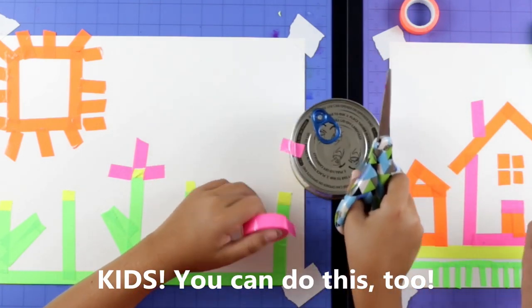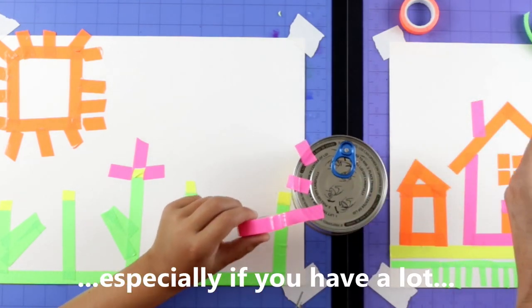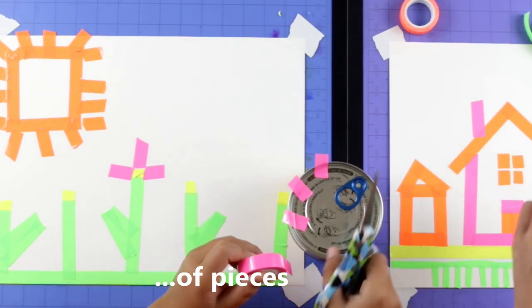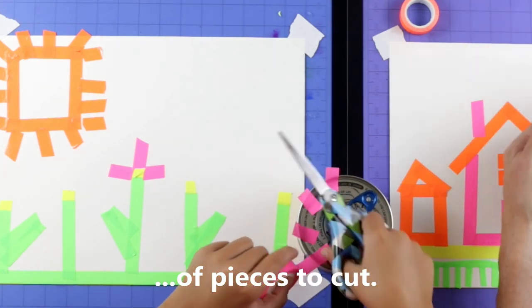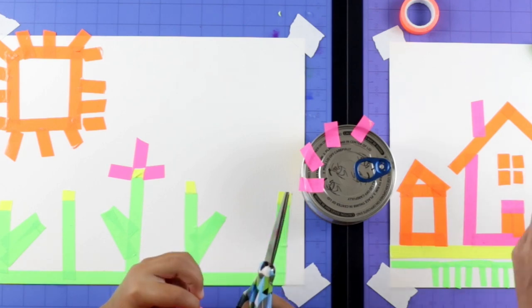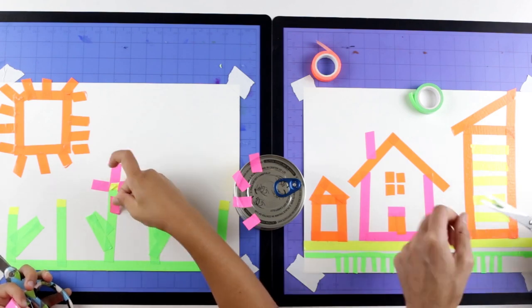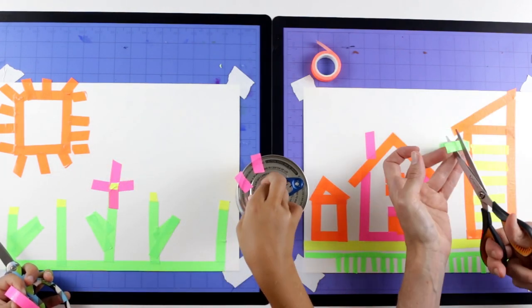Kids, you can do this too. It makes it easier to cut the tape, especially if you have a lot of pieces to cut. You can put the end of the tape on the can or the edge of the table and it holds the tape in place for you while you cut it with the scissors.